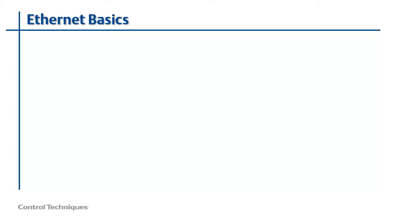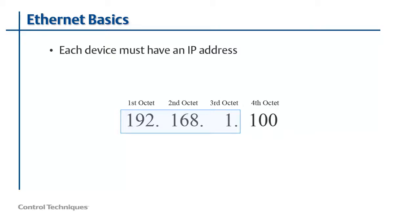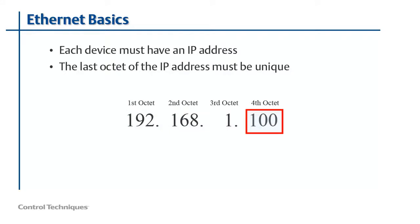Before we look at how to set up the drive, let's take a minute to discuss some Ethernet basics. Every device on an Ethernet network needs what's called an IP address. IP stands for Internet Protocol. An IP address is made up of four 8-bit numbers called octets. It's important to understand that the first three octets of the IP address define the subnetwork. The devices on the network need to have the first three octets of the address be the same, while the last octet must be different for each device.